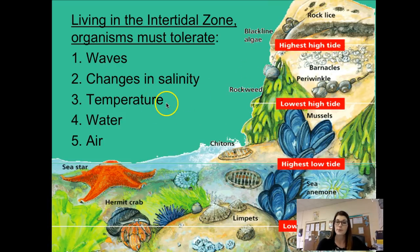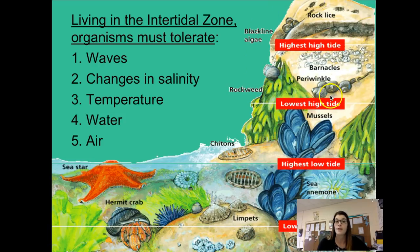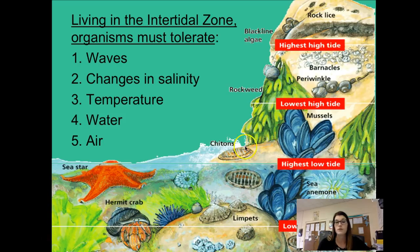Temperature also changes a lot, especially in tide pools, because shallow water heats up quickly when the sun shines on it. Organisms at the top in the rocky shore area will be exposed to water sometimes but often exposed to air, so they need to handle both. As you go further down into the lower tide areas, organisms experience more water than air, but still have to tolerate both air and water exposure.